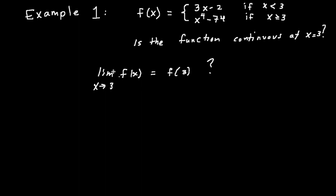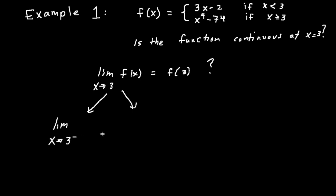If the limit and the function value are exactly the same, then the function is indeed continuous. To determine the limit, it looks like at three is where the function changes from three x minus two to x to the fourth minus 74. So we'll need to break this into two parts: our left and our right hand limit. The limit as x approaches three from the left uses three x minus two, and the limit as x approaches three from the right uses x to the fourth minus 74.